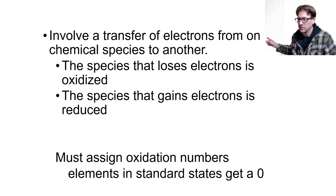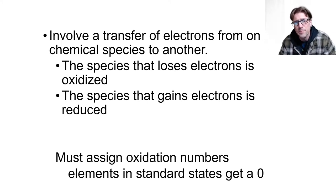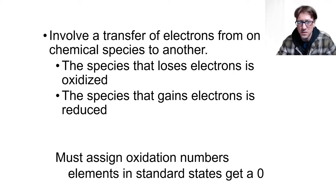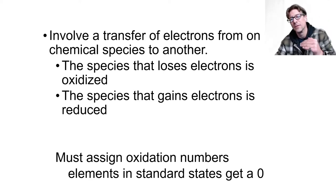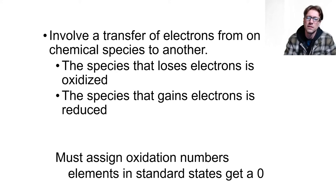Redox reactions involve a transfer of electrons from one chemical species to another. We have to look and see which species is giving up electrons and which is gaining electrons, so we can determine what's being oxidized and what's being reduced. The species that loses electrons is oxidized — its charge goes up. The species that gains electrons is reduced — its charge goes down.